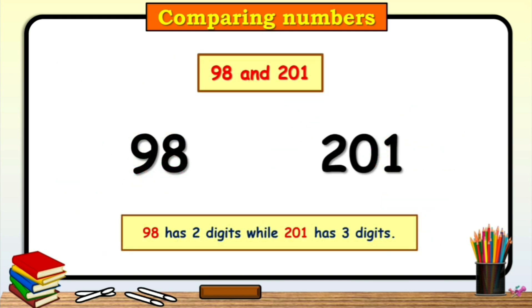Let's take an example. Which number is greater, children? Number 98 or number 201? Number 98 has two digits, while number 201 has three digits. So, here number 201 is greater than 98.